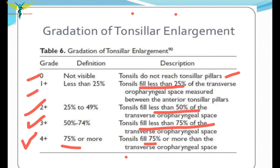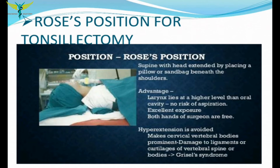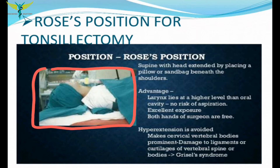In grade four plus, the tonsils of both sides may even be touching each other, and are also called 'kissing tonsils.' Now for the procedure: the patient must first be placed in the correct position. The most common and important position for tonsillectomy is the Rose position, where the patient is kept supine with the head extended by placing a pillow or sandbag beneath the shoulders.